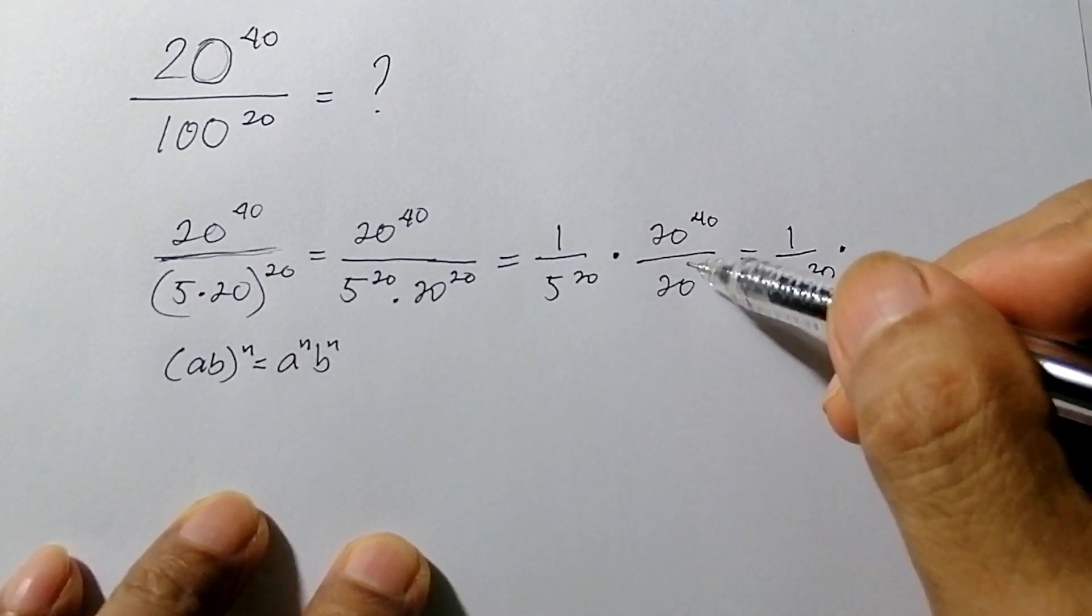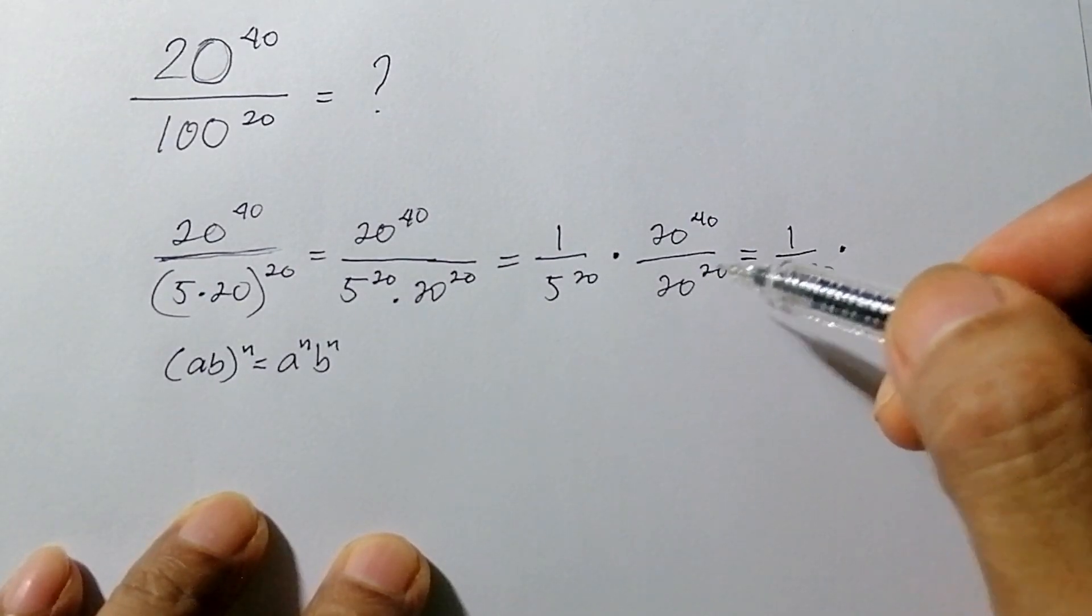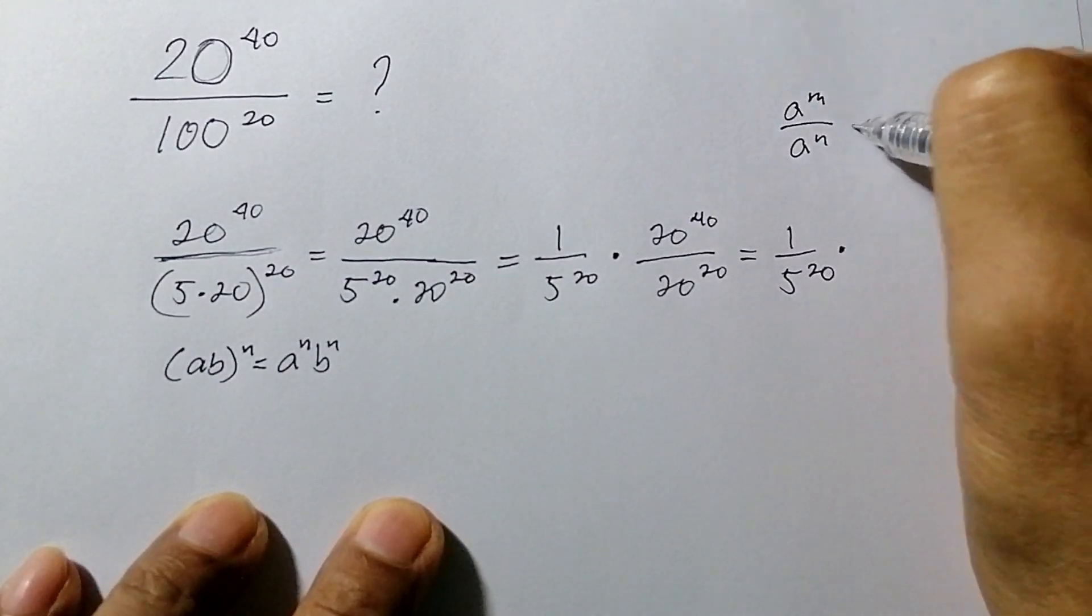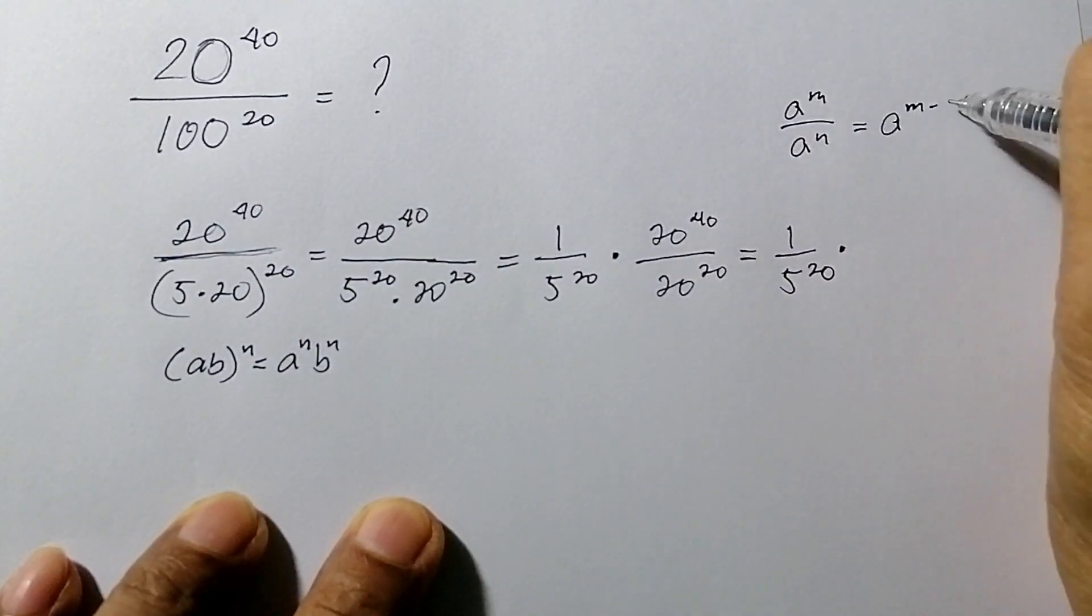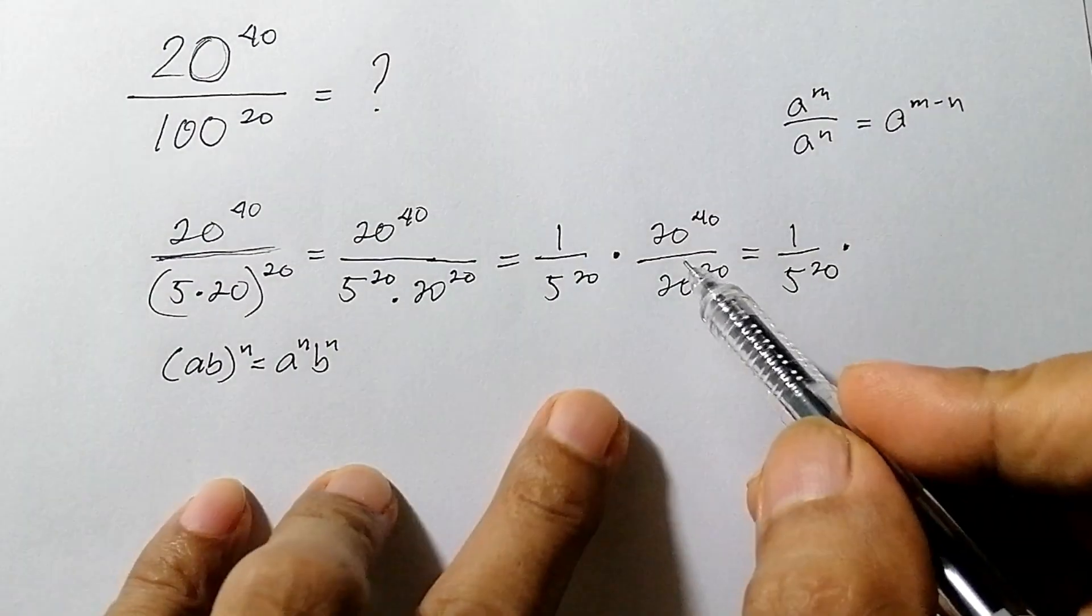In this case we are going to use the quotient property for exponents, which is a^m over a^n is equal to a^(m-n). So we apply this.